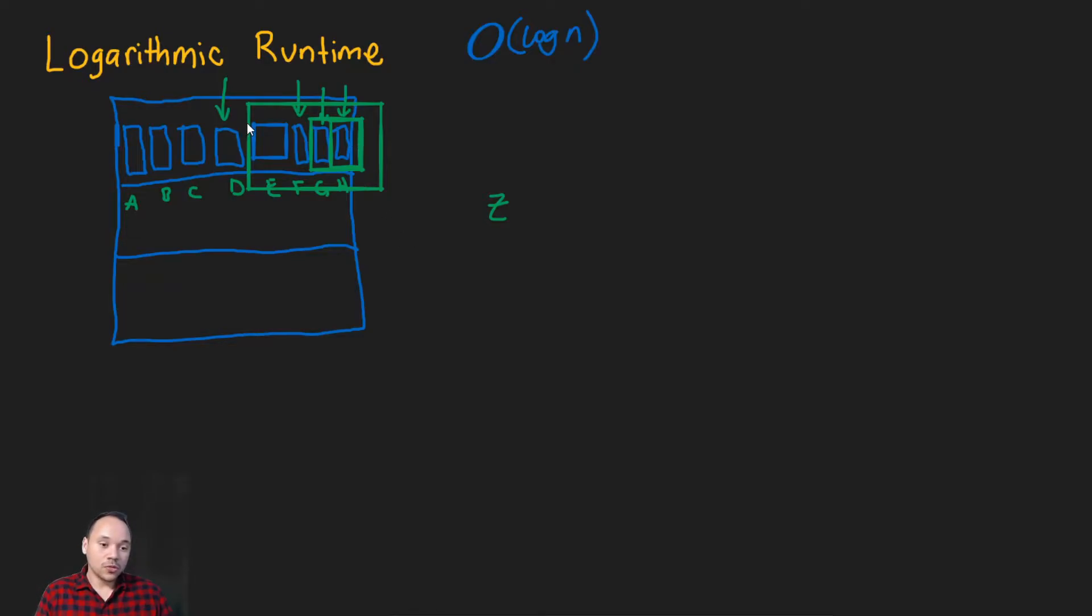But you can see that it's very efficient. We didn't have to go through each one of the books until we found Z. We just partition in half every time. And that's why it's giving a log n.